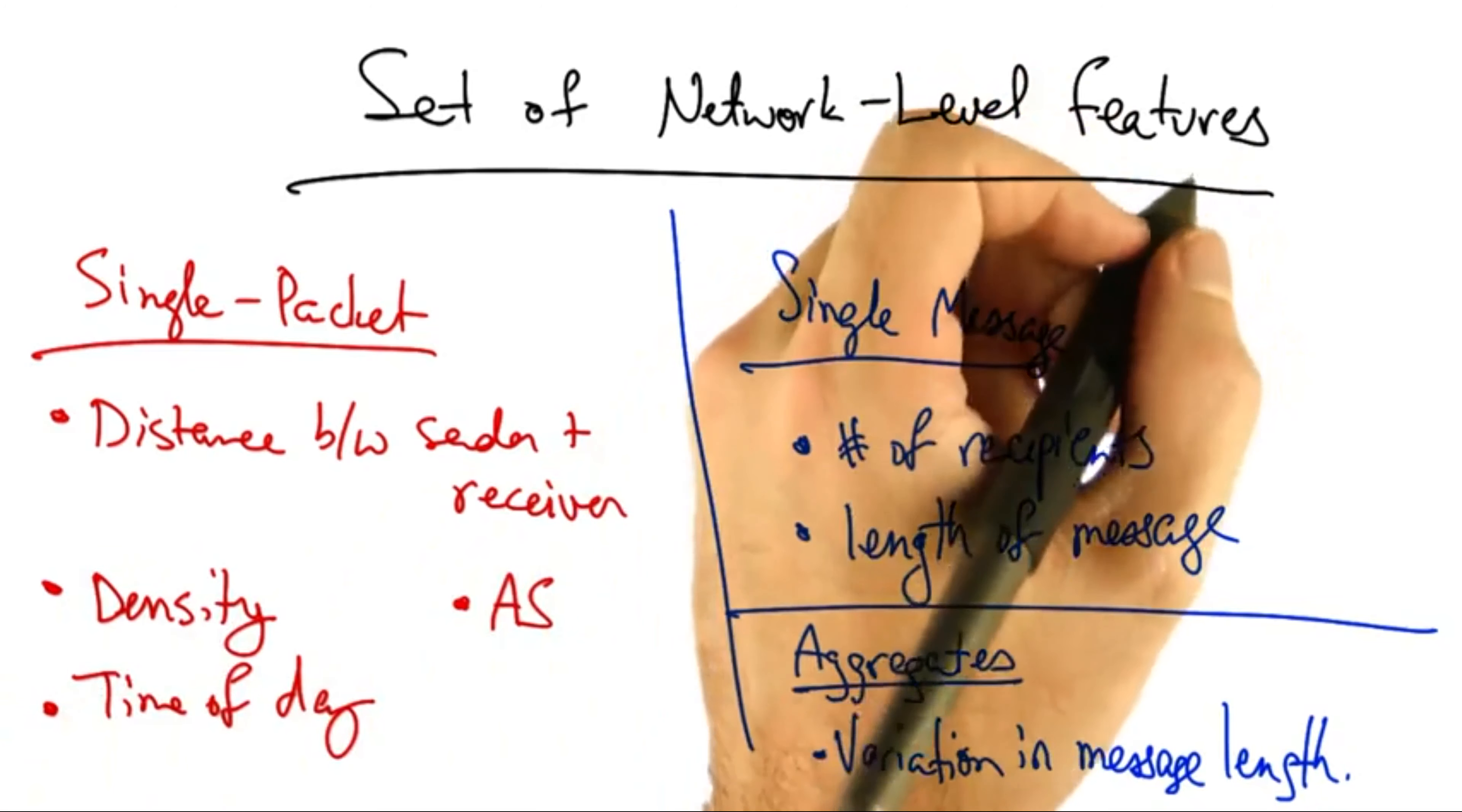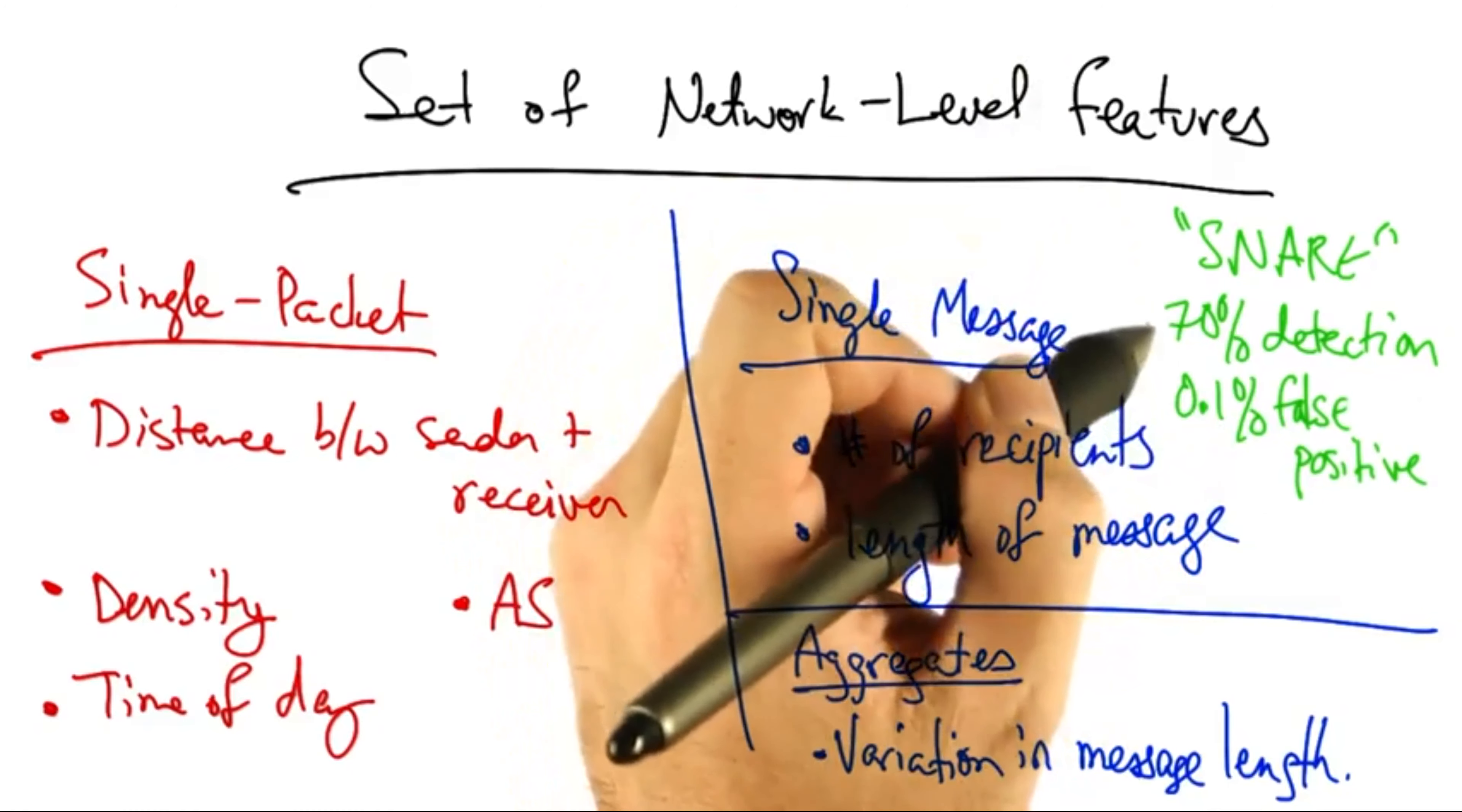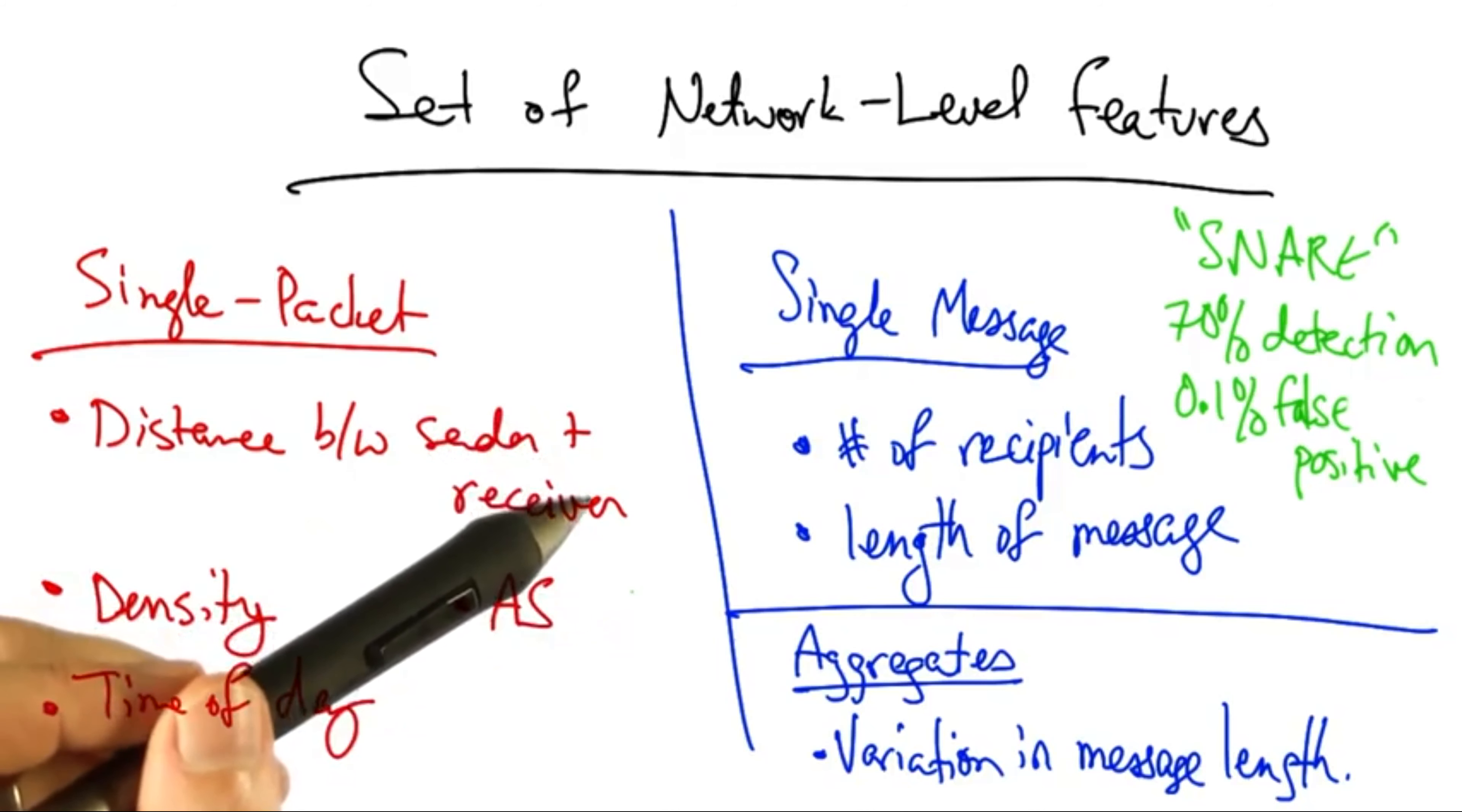Putting these features together in a system called Snare, or Spatio-Temporal Network Level Automated Reputation Engine, achieved a 70% detection rate for a false positive rate of about one-tenth of one percent. This level of accuracy is good enough to be used in practice. It provides comparable performance to state-of-the-art IP-based blacklists such as SpamHouse, but it only uses network-level features, thus making it less susceptible to the ephemeral nature of IP-based blacklisting.